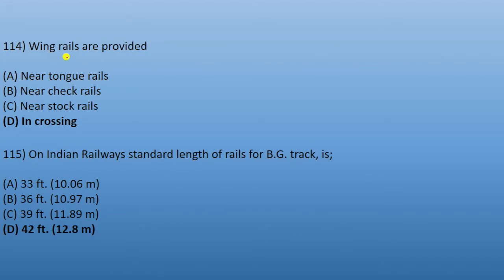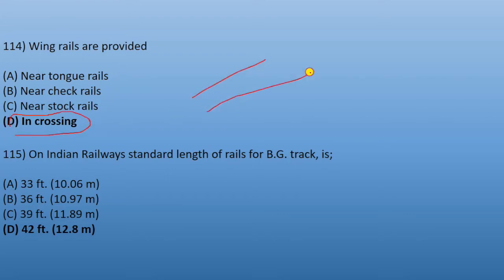Next: wing rails are provided near tongue rails, near check rails, near stock rails, or near crossings. We need to cross the road or rail with the rail, so wing rails are provided near the crossing.